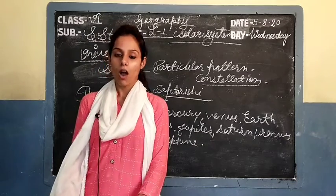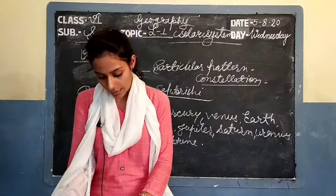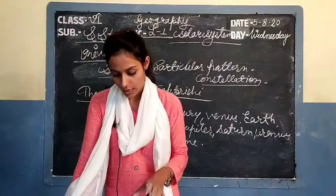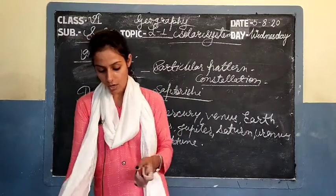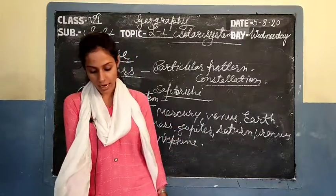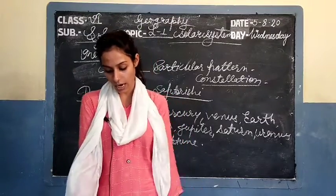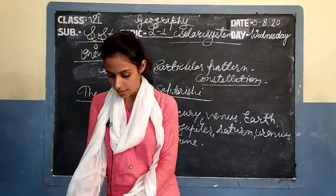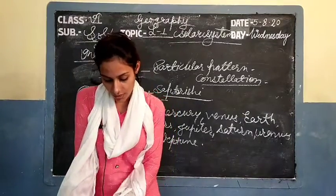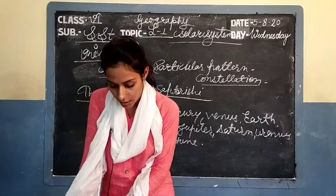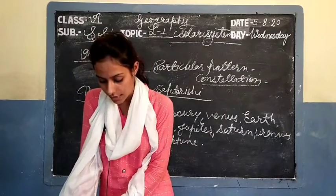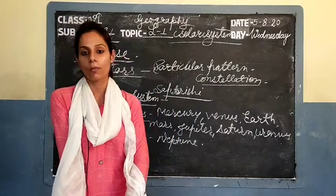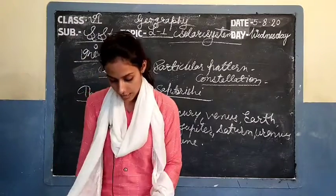Venus is the hottest planet. Planets can also be rated according to their size in ascending order. In ascending order of size: Mercury, Mars, Venus, Earth, Neptune, Uranus, Saturn, and Jupiter.